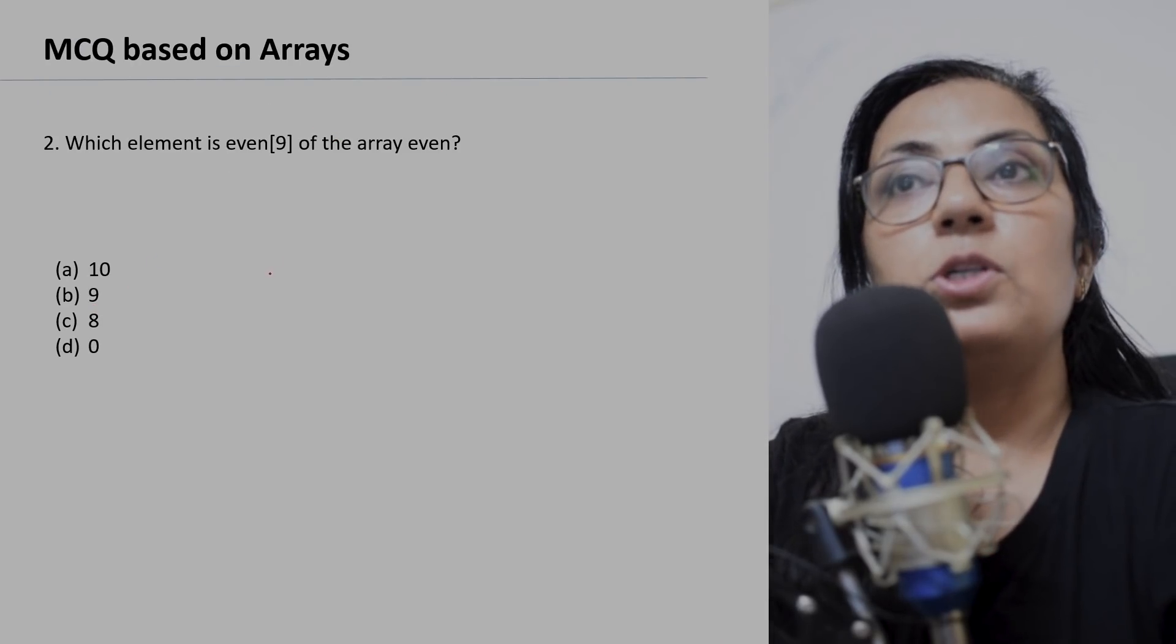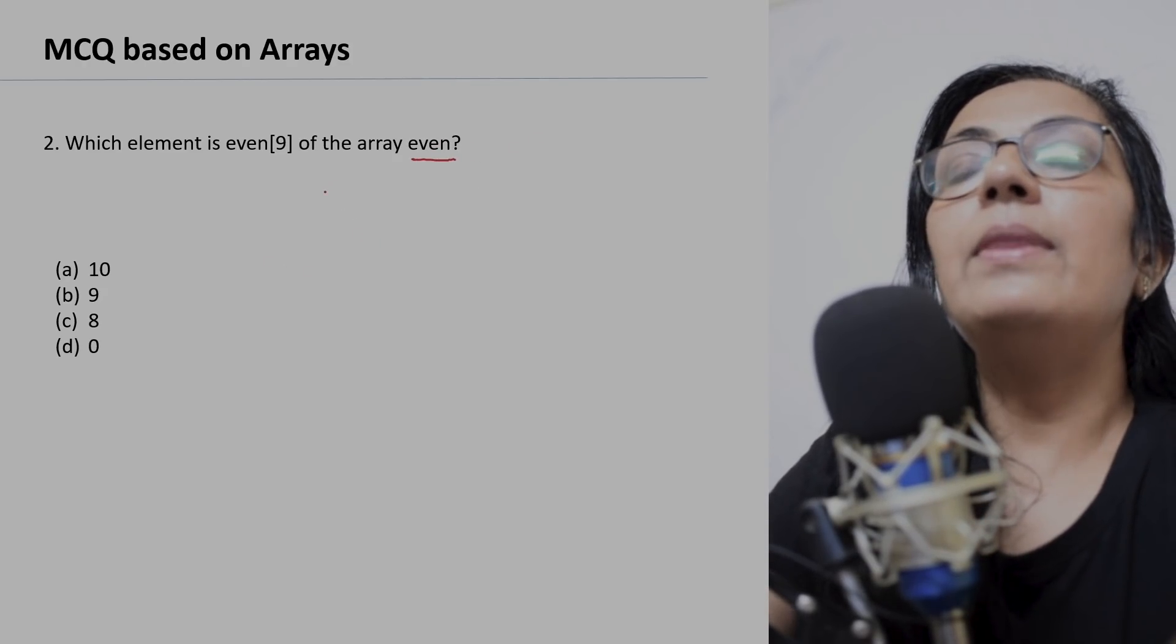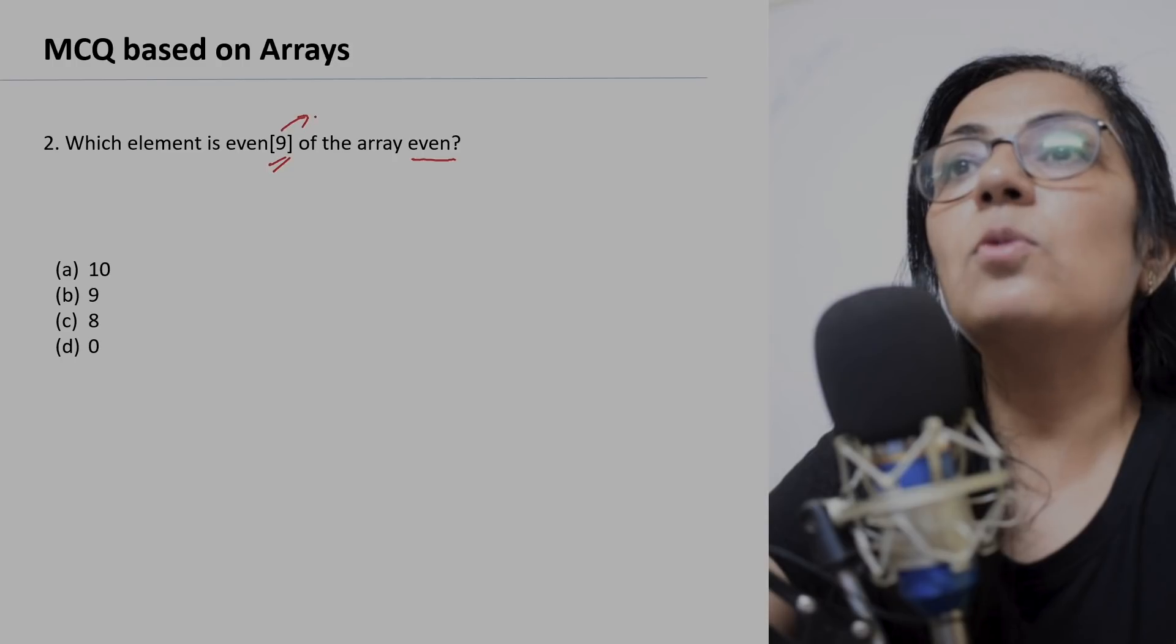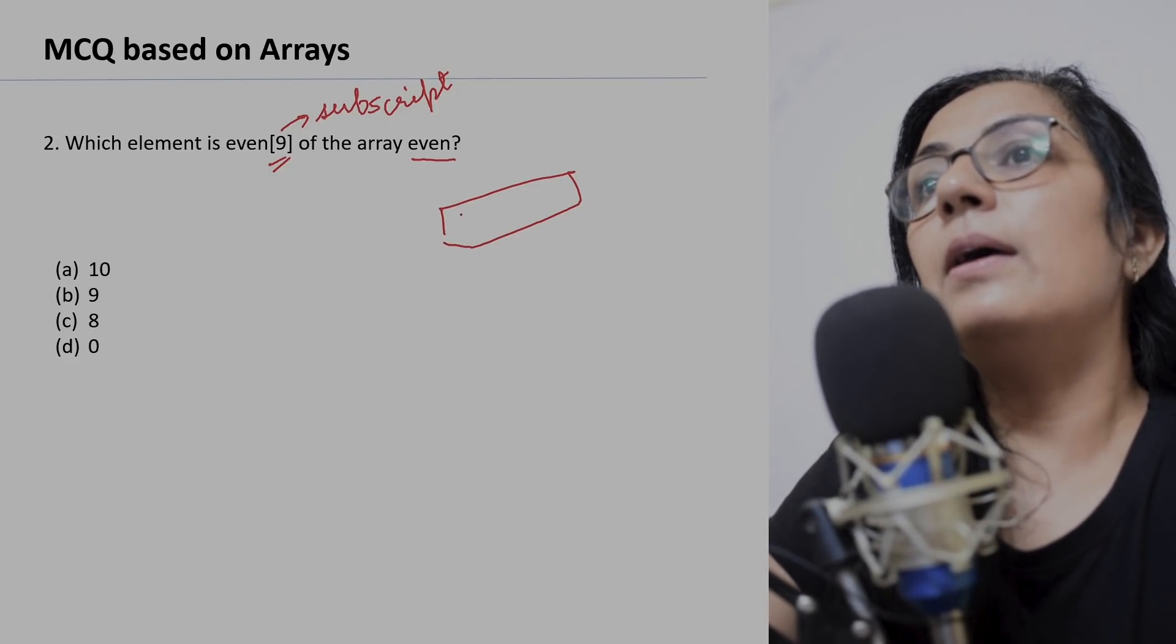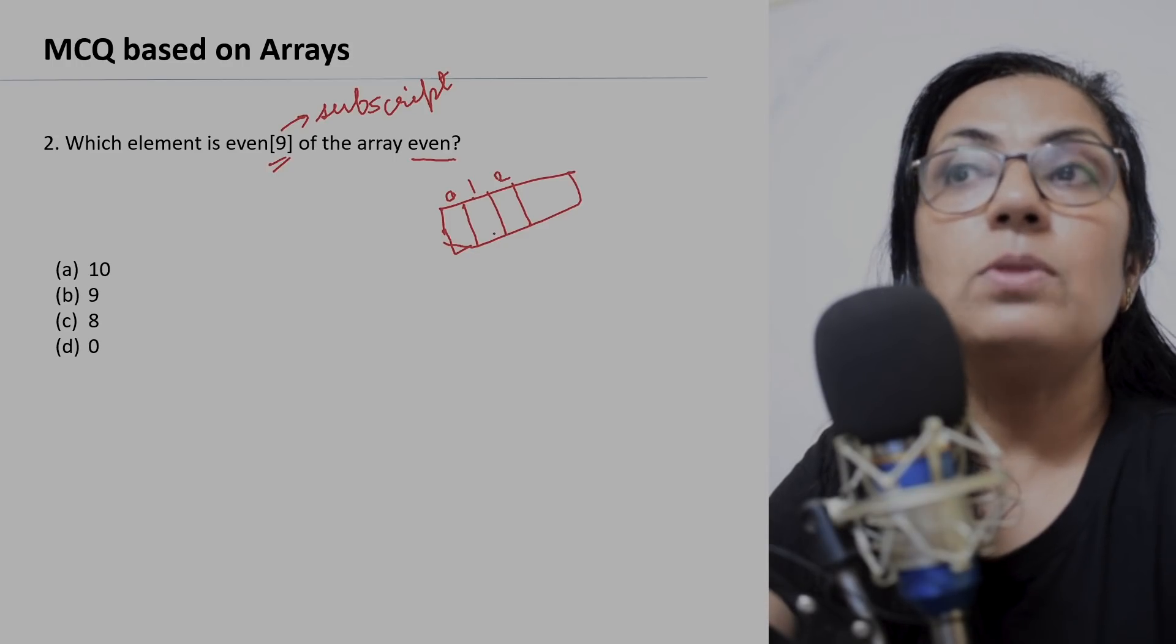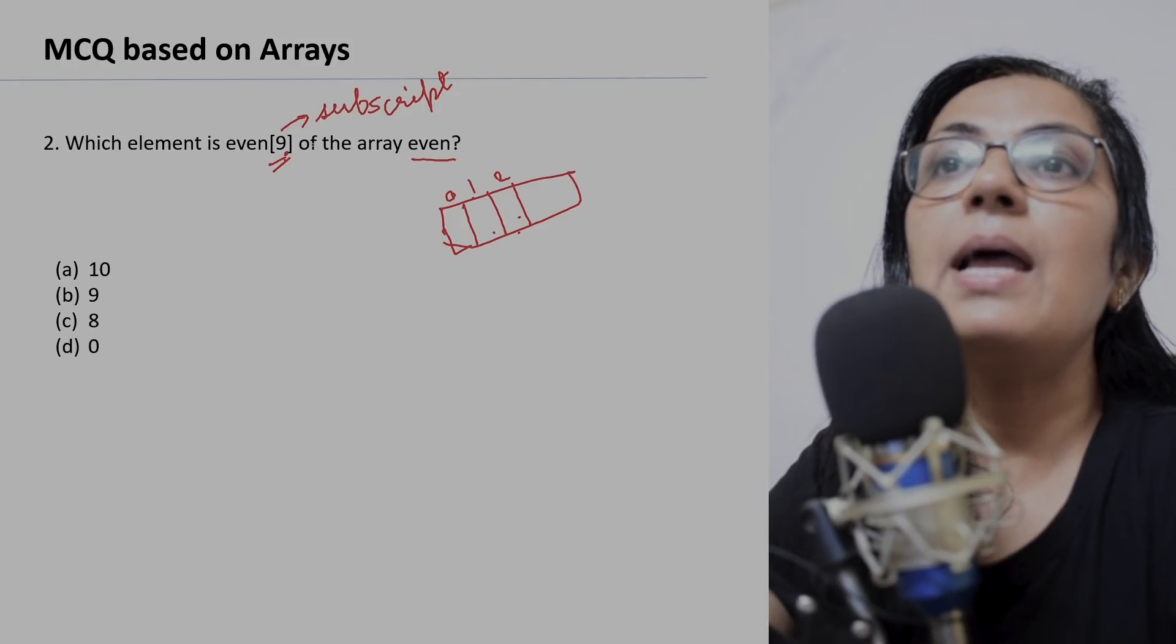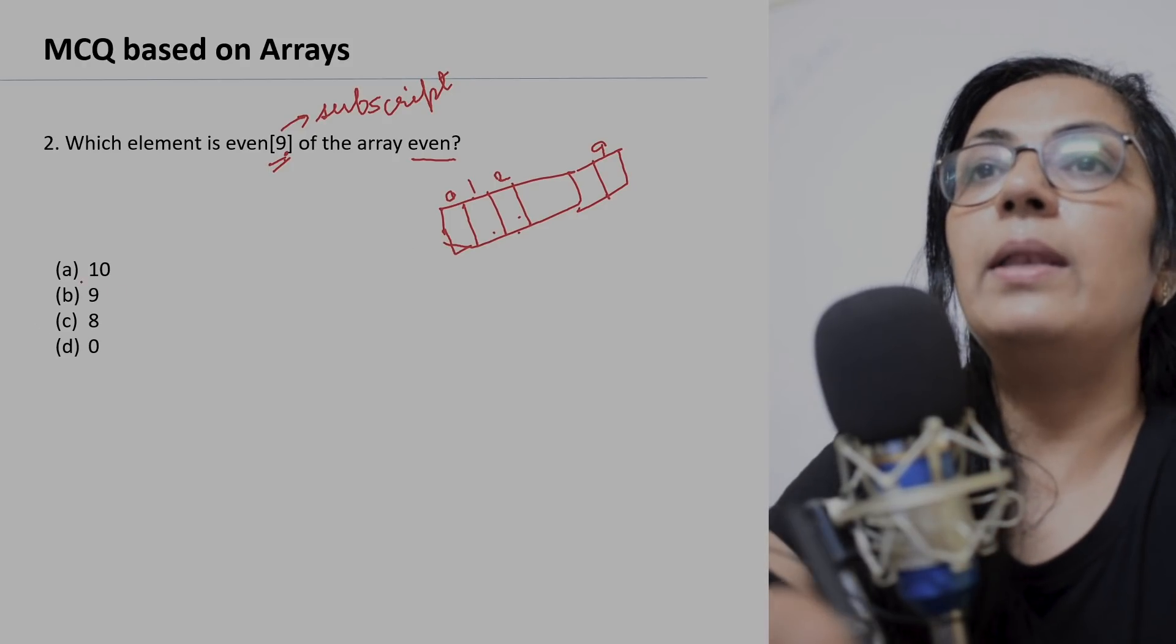Second question: which element is even[9] of the array, if the array name is even? Children, here the value given within the square brackets denotes the subscript. You know when we write the array, the first index number is zero, then second index number is one, two, three like this. So zeroth index number will give you the first element of the array, then first index number gives you the second element, second index number gives you the third element. Similarly, even[9], this index number is 9, it will give you the tenth element of the array. Always the position is index number plus one. So option A is the correct answer.